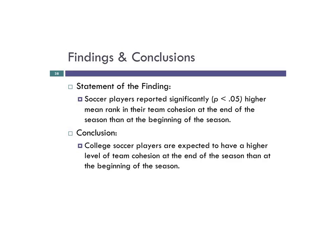We then write a statement of the finding: soccer players reported significantly higher mean rank team cohesion at the end of the season than at the beginning of the season. Then we conclude appropriately, without statistical jargon, that soccer players are expected to have a higher level of cohesion at the end of the season than at the beginning. This is a quick introductory video — feel confident in the Z-distribution and how it works, review the notes as necessary, and come to class with questions.